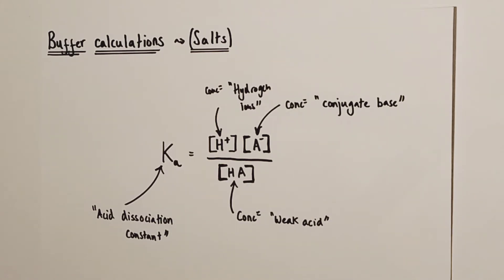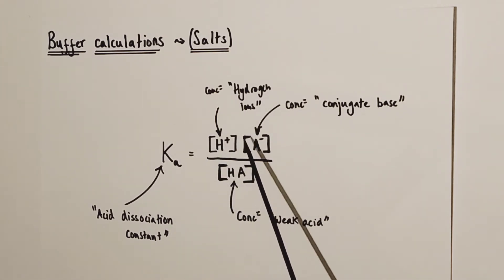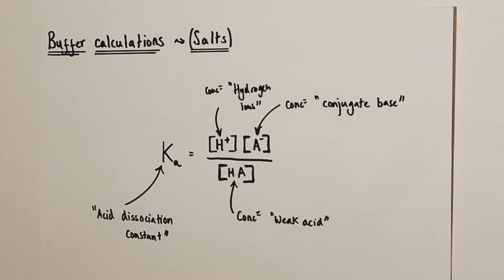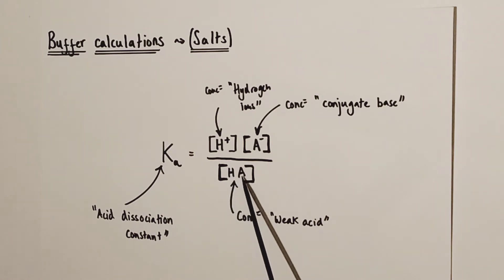For a weak acid in isolation, we assume that the concentrations of hydrogen ions and conjugate base ions formed via dissociation are the same, as the weak acid dissociates into equal proportions of hydrogen ions and conjugate base A- ions respectively.